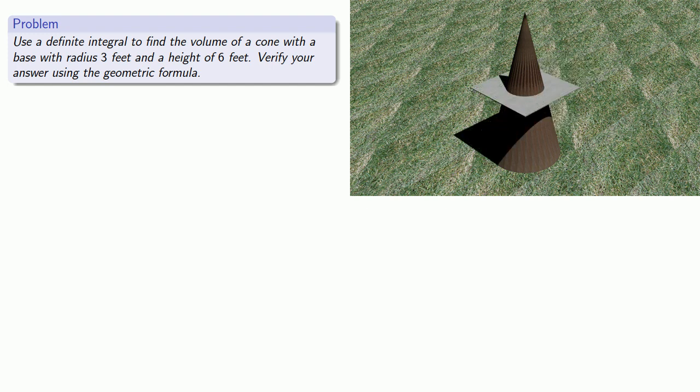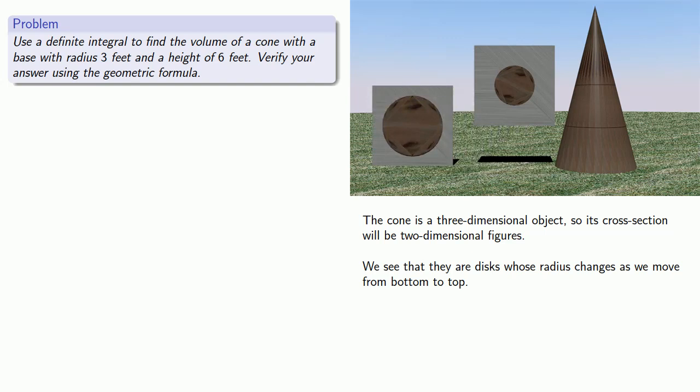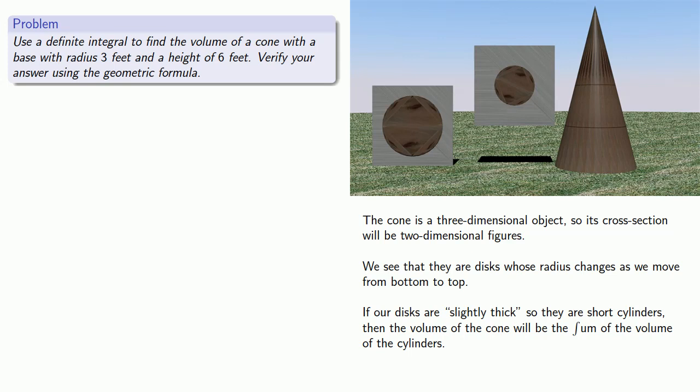The cone is a three-dimensional object, so its cross-sections will be two-dimensional figures. What figures? We see that they are disks whose radius changes as we move from bottom to top. Now if we imagine our disks as slightly thick, so they are short cylinders, then the volume of the cone will be the sum of the volumes of the cylinders.